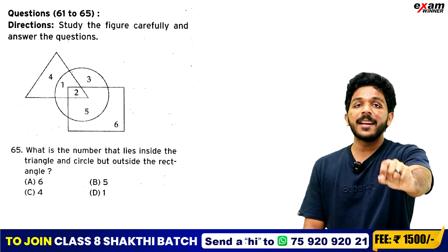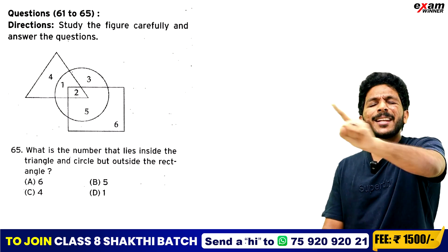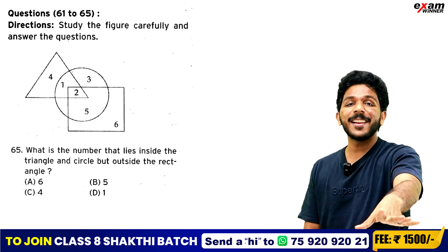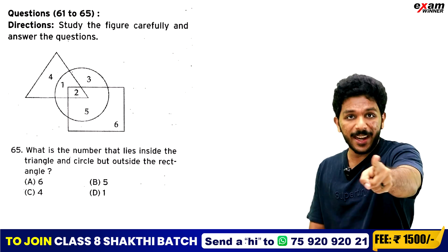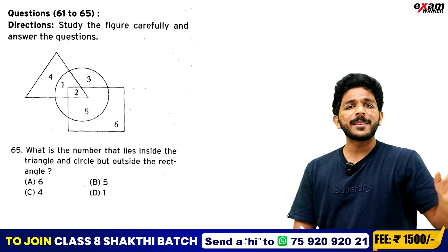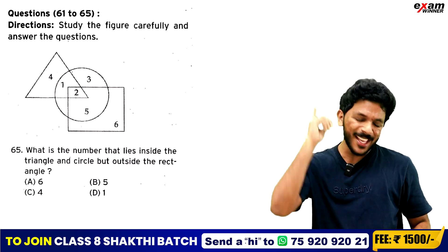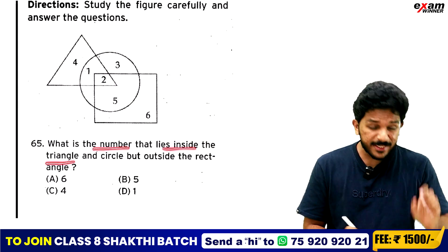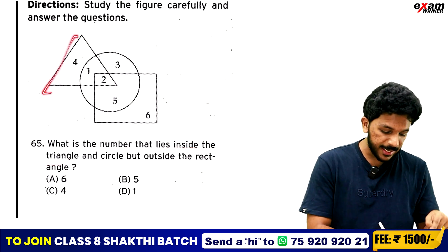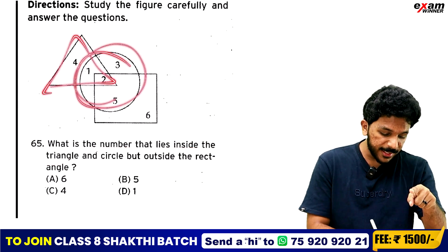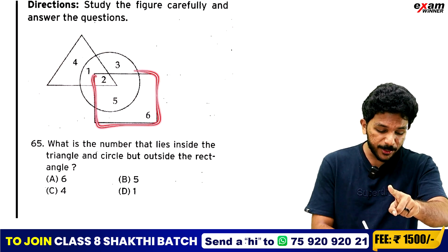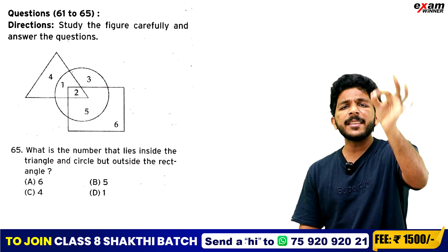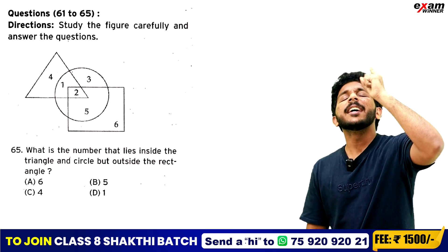This question is for you to answer. Leave all your answers in the comments. What is the number that lies inside the triangle but not inside the circle, the puck shape, or the rectangle? Options A, B, C, D — comment on this video.